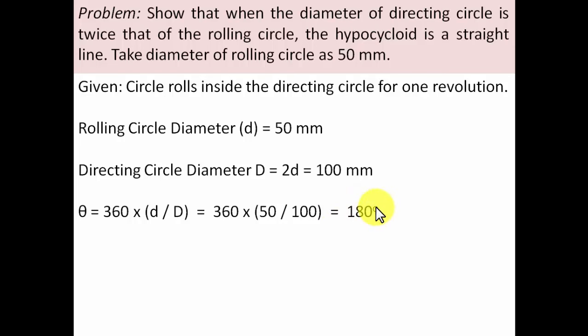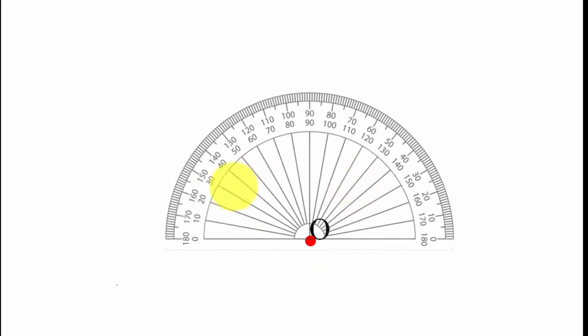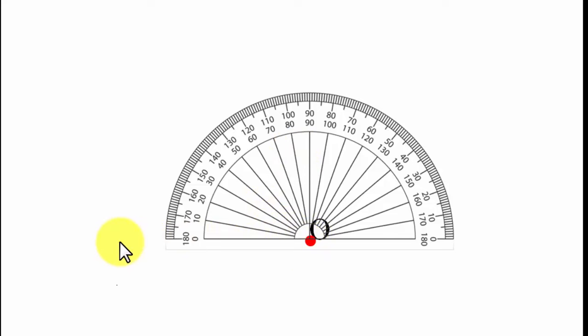We need to prove that when d equals 2D, the hypocycloid is a straight line. Let's place a point O as the center of the directing circle, put a protractor here. The directing circle has a diameter of 100 millimeters, hence its radius is 50 millimeters. From point O we go left by 50 millimeters (the radius), and from that point we go right by 50 millimeters.